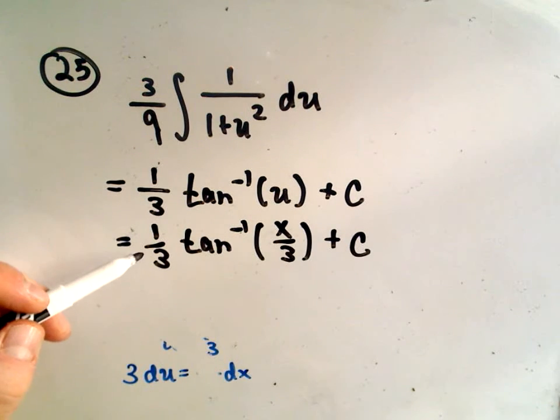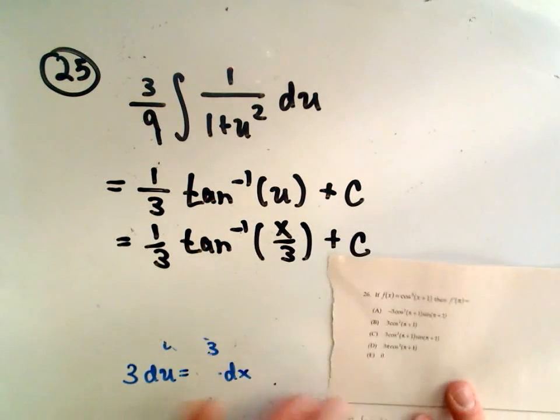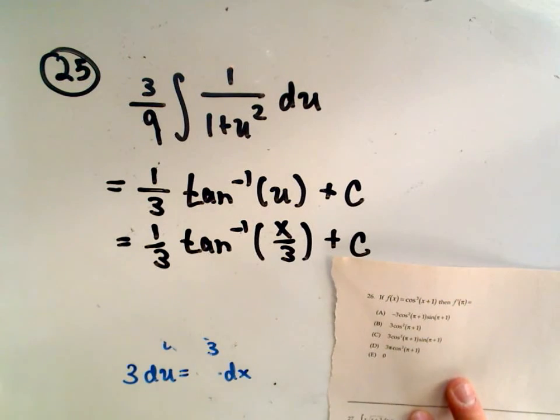It says the antiderivative will be 1/3 arctangent of x over 3. So let's look at one more here. 26 is just another derivative problem.